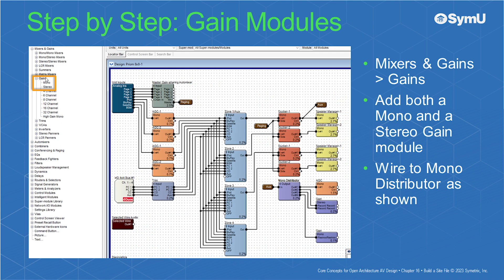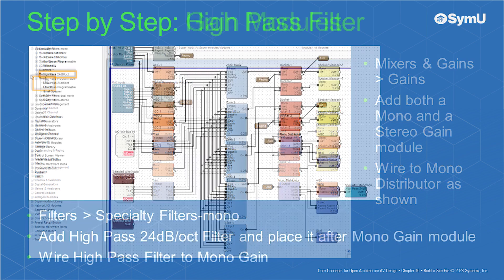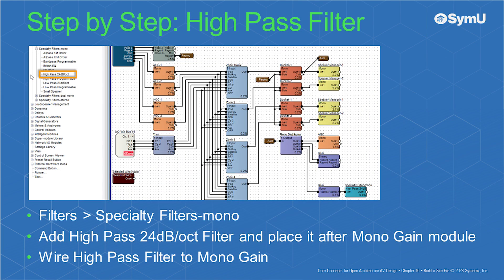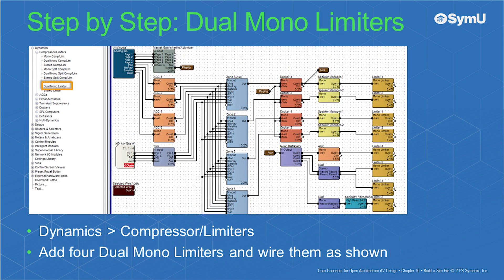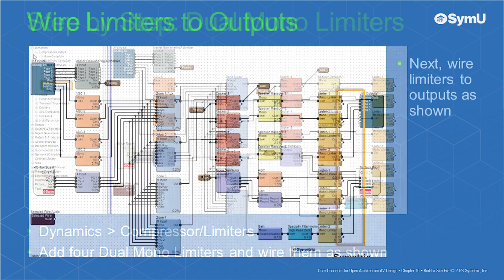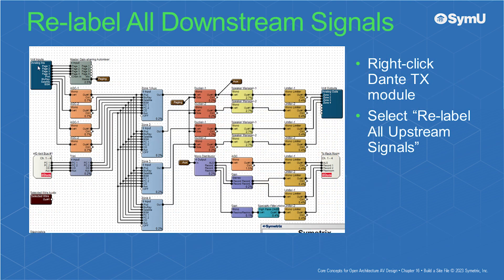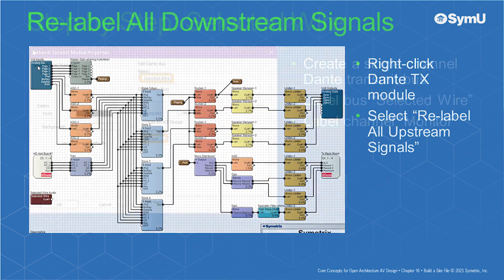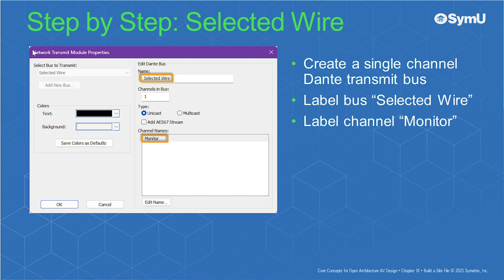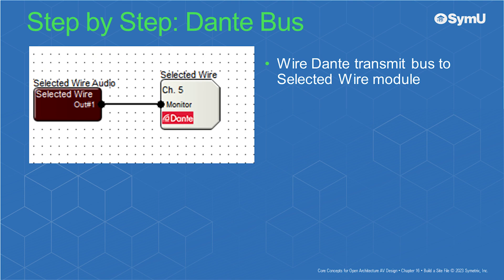Under mixers and gains, add both a mono and stereo gain module. Wire them to the mono distributor as shown. Under filters, specialty filters mono, add a high-pass 24dB per octave filter and place it after the mono gain module. Next, wire the high-pass filter to the mono gain. Under dynamics, compressor limiters, add four dual mono limiters and wire the limiters as shown. Next, wire the limiters to the outputs as shown. Right-click on the Dante transmit module and select relabel all upstream signals. Create a single channel Dante transmit bus, label the bus 'selected wire' and label the channel 'monitor.' Wire the Dante transmit bus to the selected wire module.